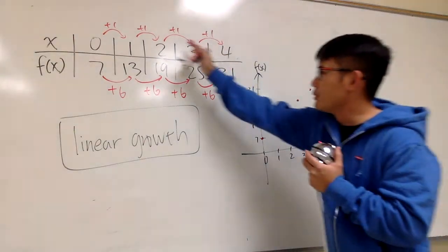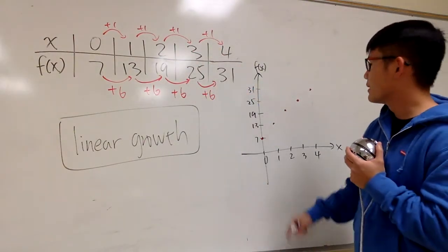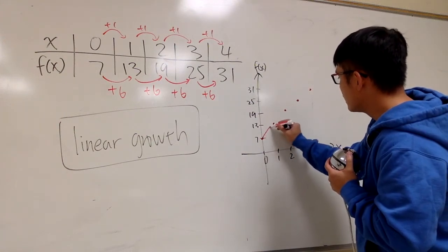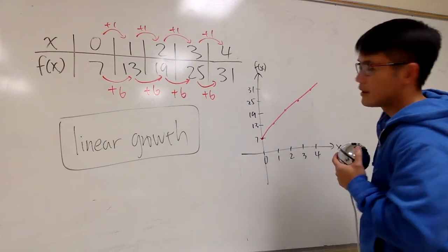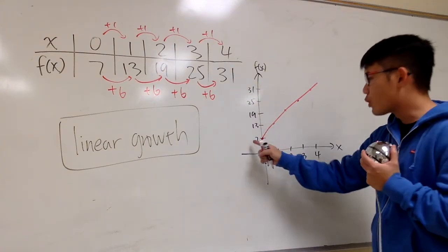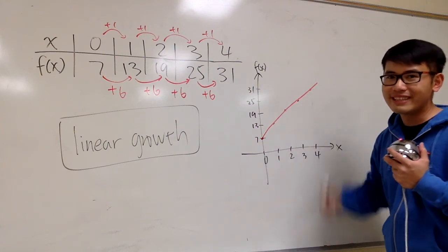You see that when you put all these points onto the graph, when you connect the dots, you see what? You see a line. Therefore, this is what we mean by linear growth. It's growth because it's going up. It has a positive rate. That's it.